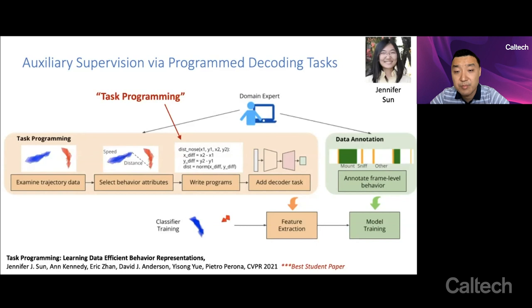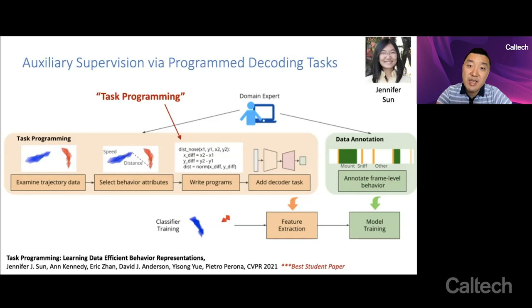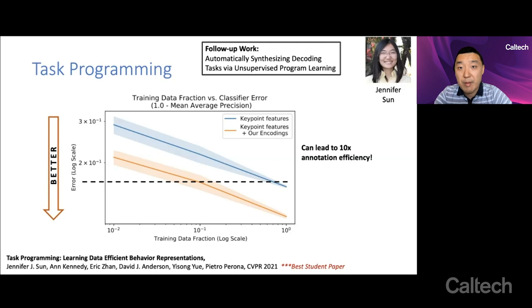So what we did, and this is led by Jennifer Sun, who was a PhD student here at Caltech, is we asked domain experts to help us design programs that capture interesting attributes of the data, such as the distance or the facing angle between the two noses of the two subjects, in this case two mice. And so you see here a program that the domain expert has written. We could of course also synthesize these programs automatically, but to start with we simply asked the domain experts to spend just a few minutes of their time to write these programs that incorporate interesting attributes. And these become auxiliary decoding tasks that you ask a neural network to try to decode in addition to its primary learning objectives.